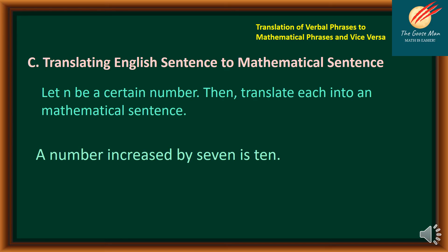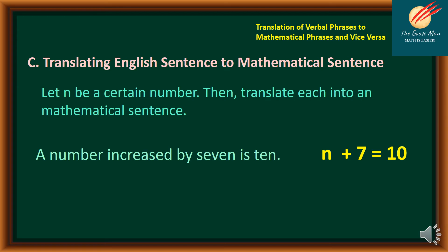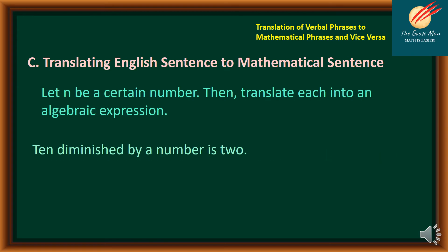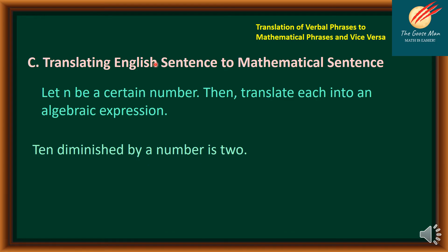We are now ready to translate English sentences to mathematical sentences. Let N be a certain number. Example: "A number increased by 7 is 10." Translates as: N plus 7 is equal to 10. Another example: "10 diminished by a number is 2." 10 in symbol is 10, diminished by is minus, a number is N, "is" is the equal sign, then 2. So this mathematical sentence is 10 minus N is equal to 2.